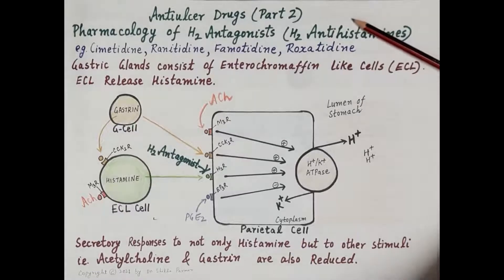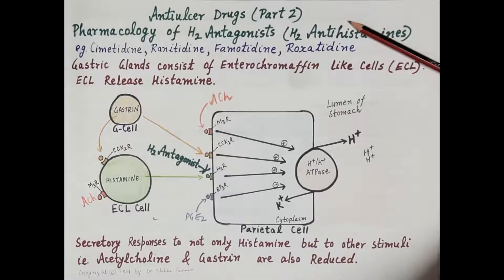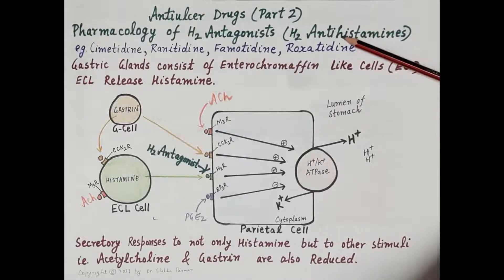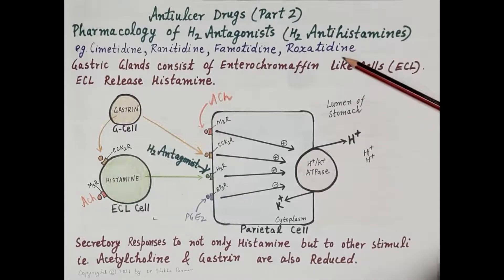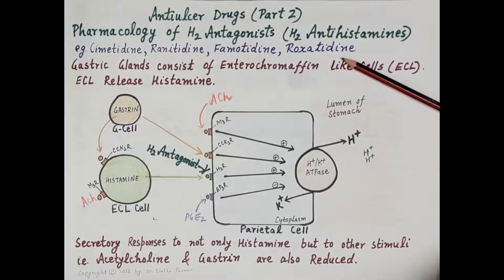In this video on anti-ulcer drugs part 2, we will study the pharmacology of H2 antagonists, also called H2 antihistamines. Some examples of H2 antagonists are cimetidine, ranitidine, famotidine, and roxatidine.